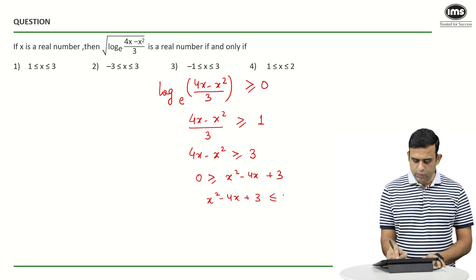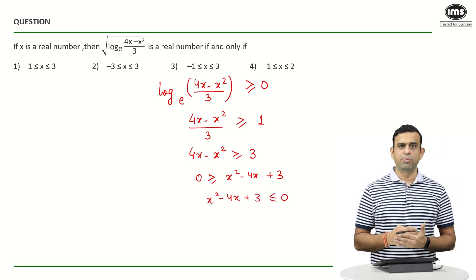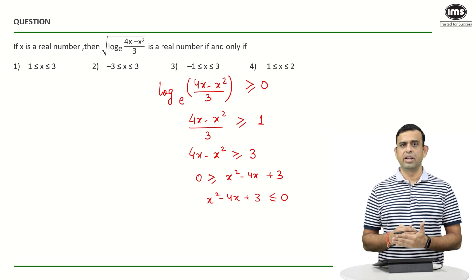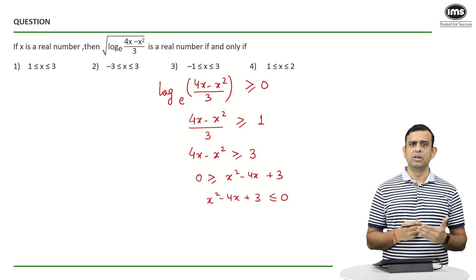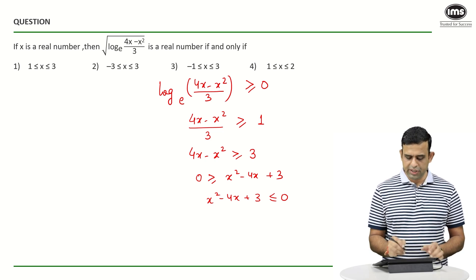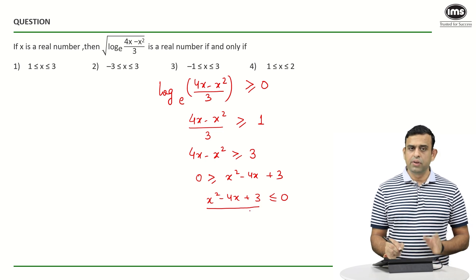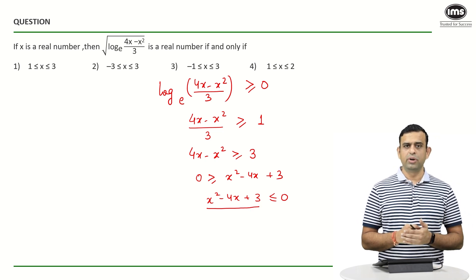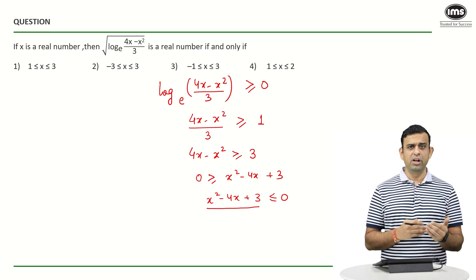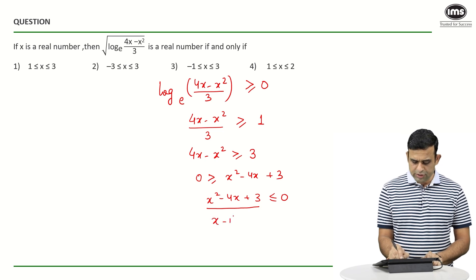The next possible step for me will be to figure out the factorization. It's a simple one: 3 × 1 = 3 and 3 + 1 = 4. So if I do the middle term factorization, I get (x - 1)(x - 3) ≤ 0.